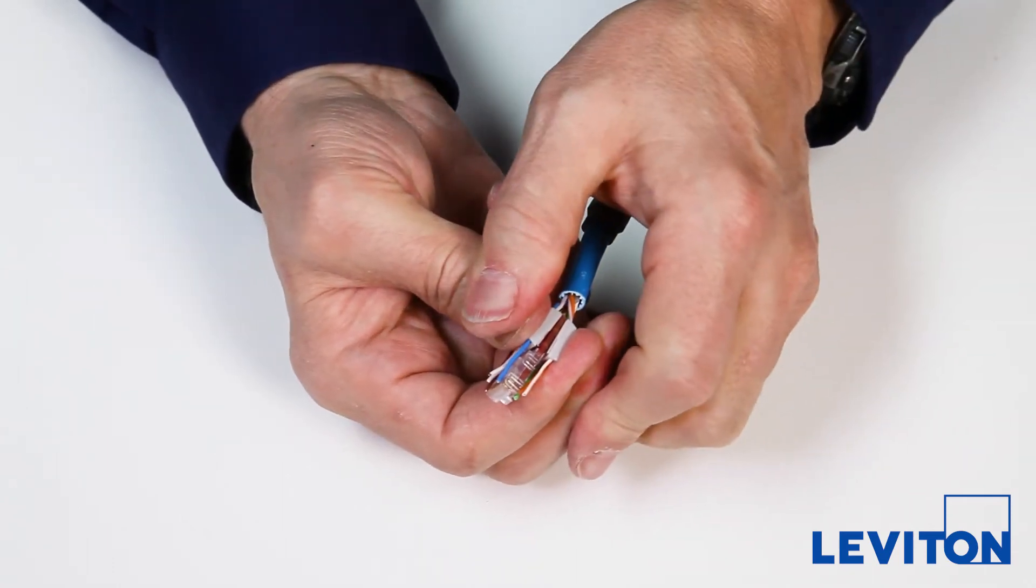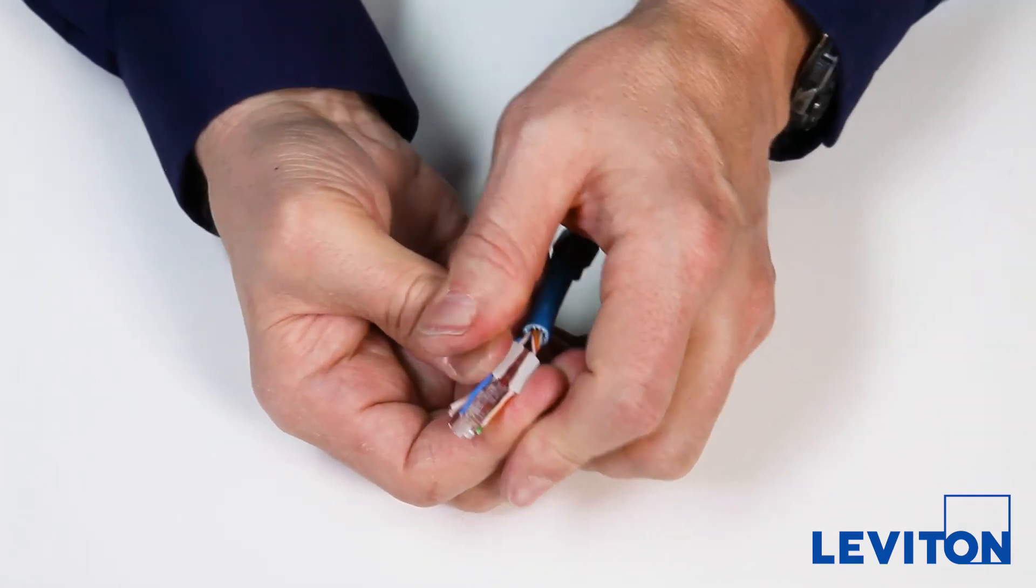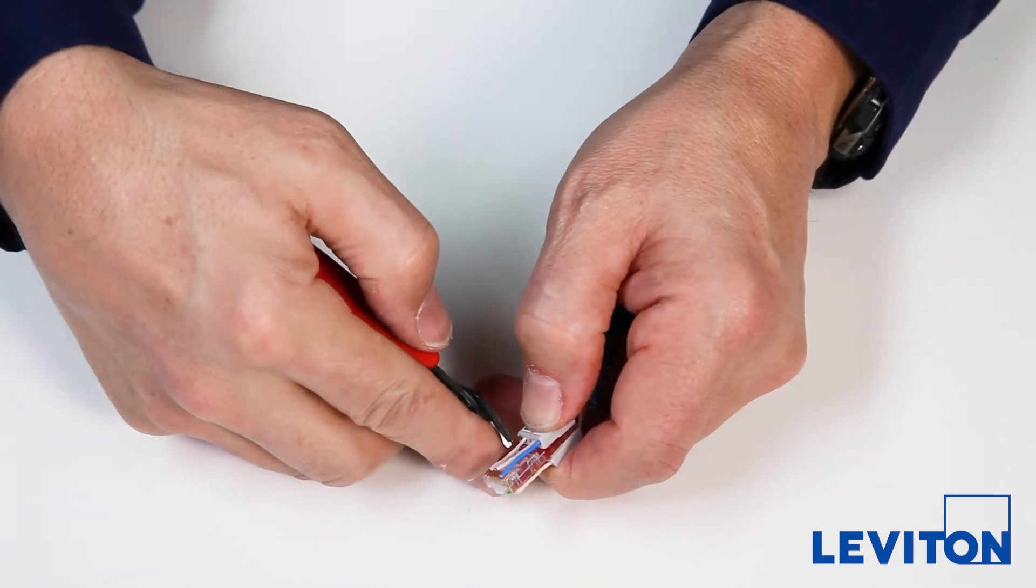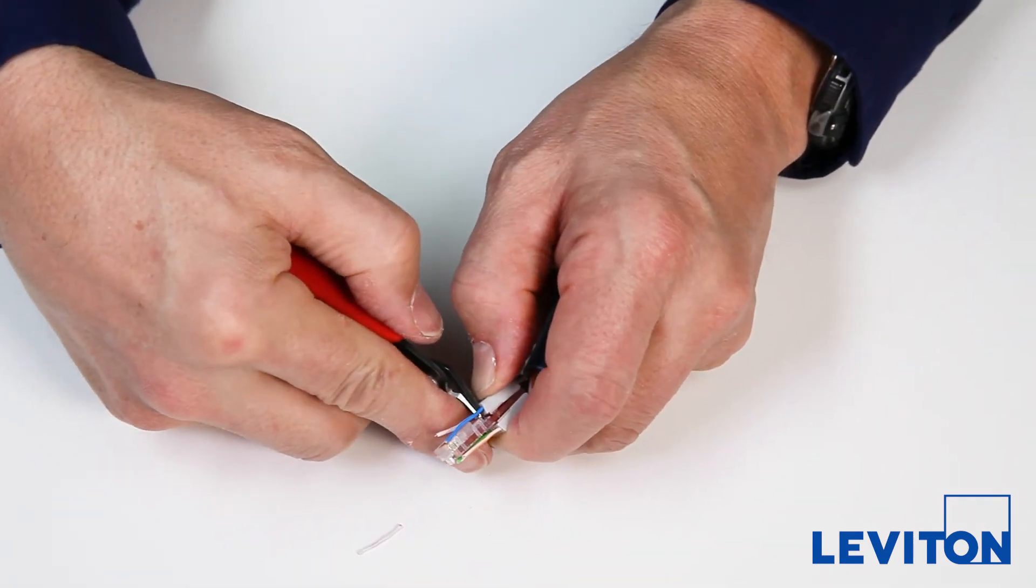To terminate the plug, squeeze the wire manager firmly onto the internal circuit board. Use the flush cutter to trim all eight wires flush with the front of the wire manager.